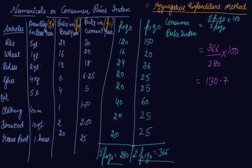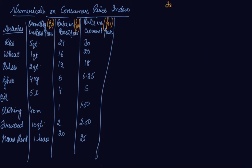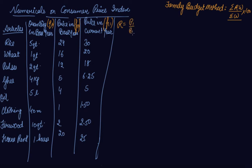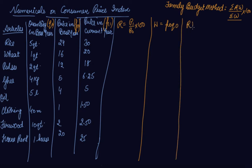Now let's take the family budget method. The formula is summation RW divided by summation W, into 100, where W is the weight and R is the price relative. The formula to calculate R is P1 divided by P0 into 100. Since weight is not given, the formula for weight will be P0 into Q0 — price of the base year into quantity of the base year. Then we find R into W.